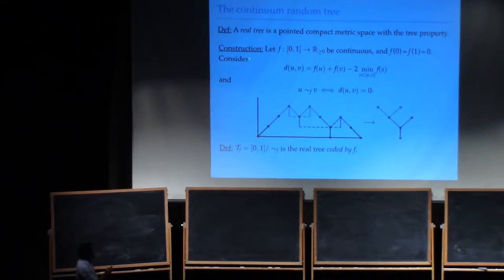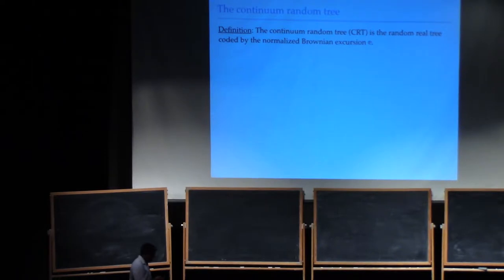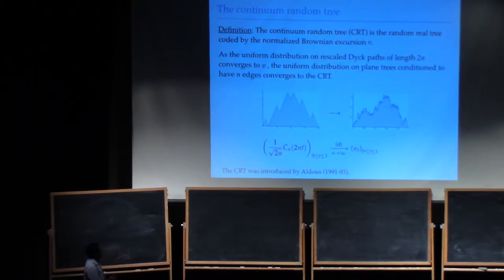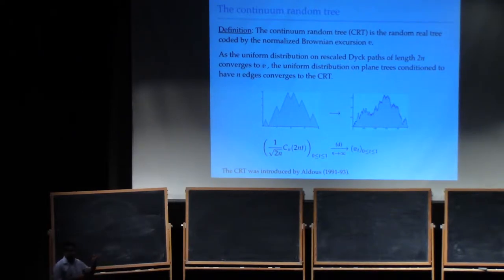Given an excursion of this nature, we define a quotient set of [0,1] and define the tree T_f to be the real tree coded by f. The continuum random tree introduced by Aldous is the random real tree coded by the normalized Brownian excursion. This is a natural scaling limit, because when you look at the uniform distribution on rescaled paths of length 2n, this converges to the CRT. The CRT was introduced by Aldous in 1993. This is the framework in which you want to think about taking scaling limits of trees.